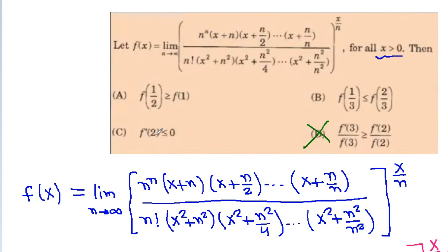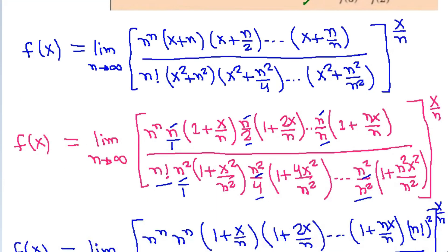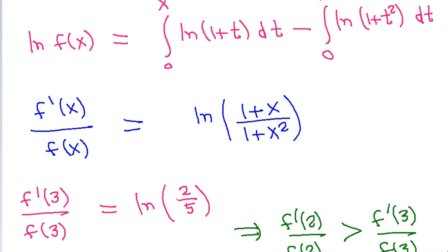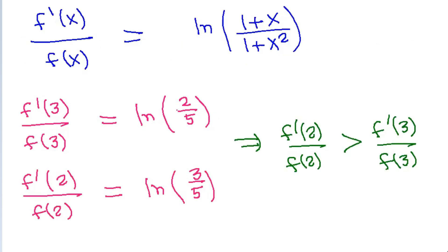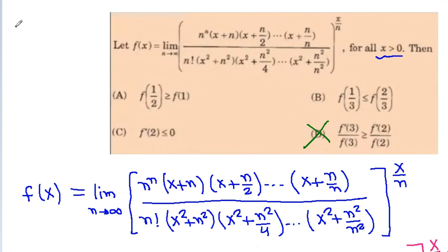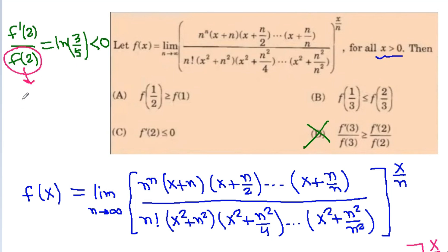Option C states f'(2) ≤ 0. We have f'(2)/f(2) = ln(3/5), which is less than 0 since 3/5 < 1. Since x > 0, f(x) is always positive, so f'(2) = f(2) × ln(3/5) < 0. Therefore f'(2) < 0, and Option C is correct.